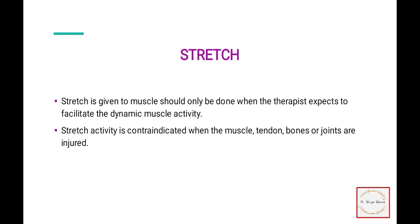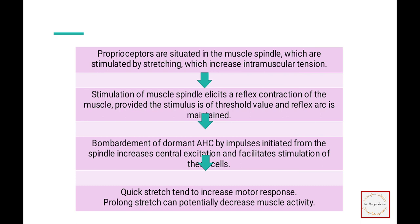The next technique of facilitation is stretch. Stretch is given to the muscle and should only be done when the therapist expects to facilitate dynamic muscle activity. For inhibition, prolonged stretch is used. Stretch activity is contraindicated when the muscle, tendon, bone, or joints are injured. Proprioceptors situated in the muscle spindle are stimulated by stretching, which increases intramuscular tension. When the muscle spindle is stimulated, there is a reflex contraction of the muscle. When the stretching reaches threshold, the anterior horn cell fires and there is a bombardment of impulses — the spindle causes central excitation and facilitation. Quick stretch tends to increase the motor response, while prolonged stretch can decrease the muscle activity.